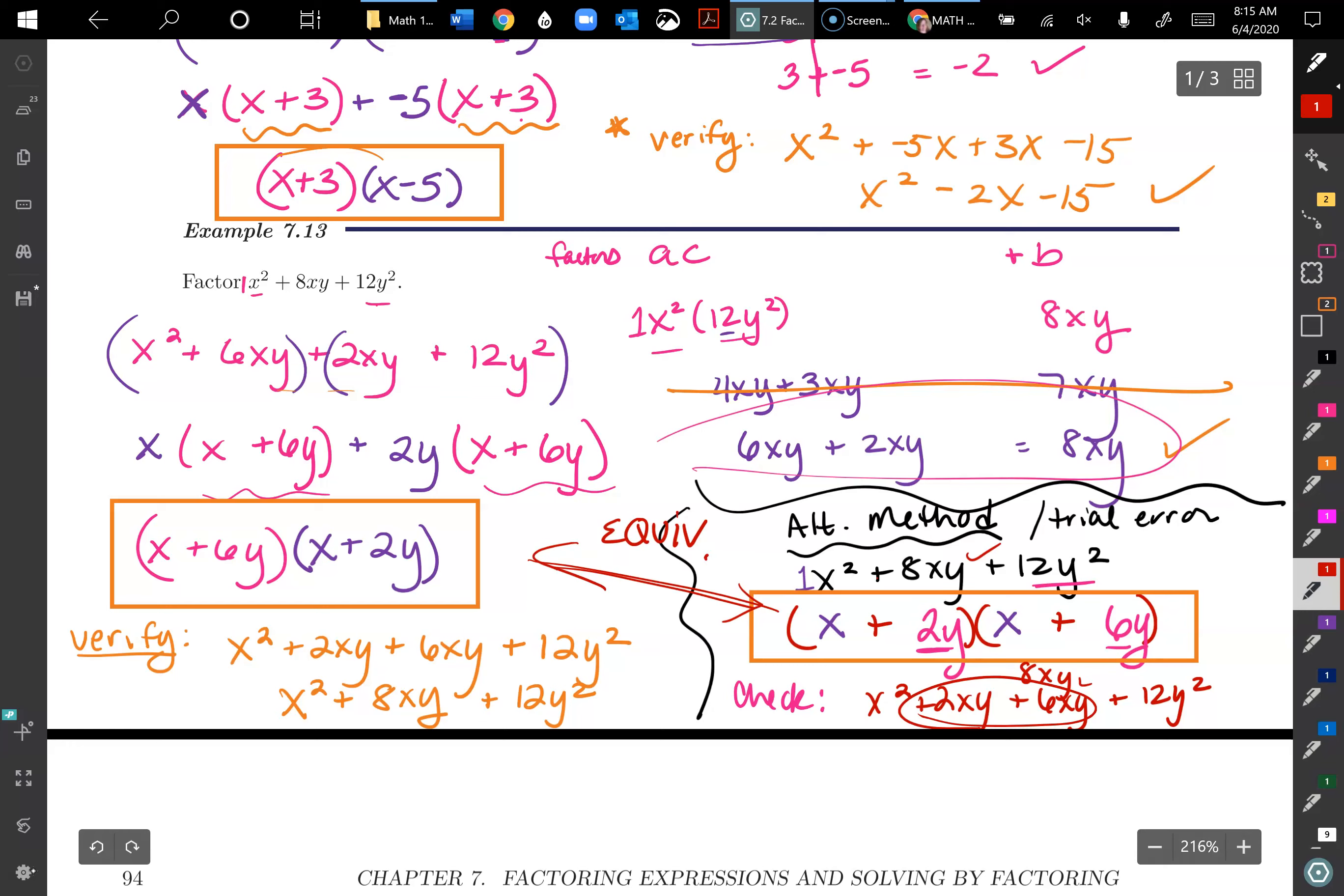You can always take two factors and switch the order of them. Make sure you take the whole binomial, not just like random pieces. All right. So that is getting pretty long for this video. So we'll stop there for that first page. And that will be part one. Thanks for watching.